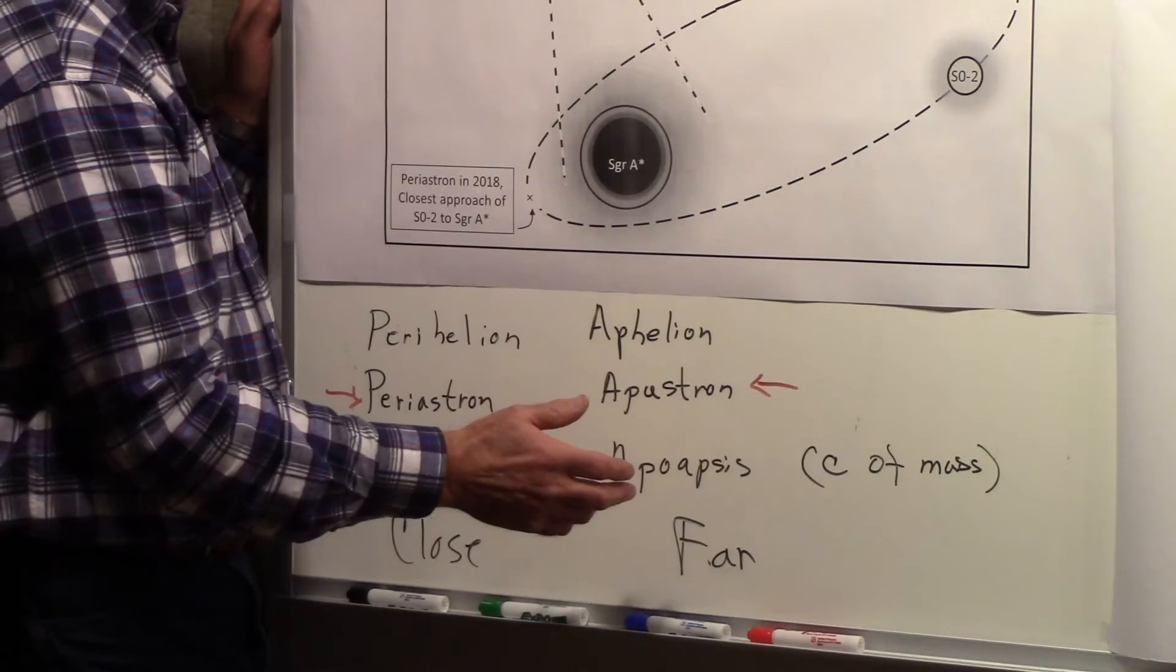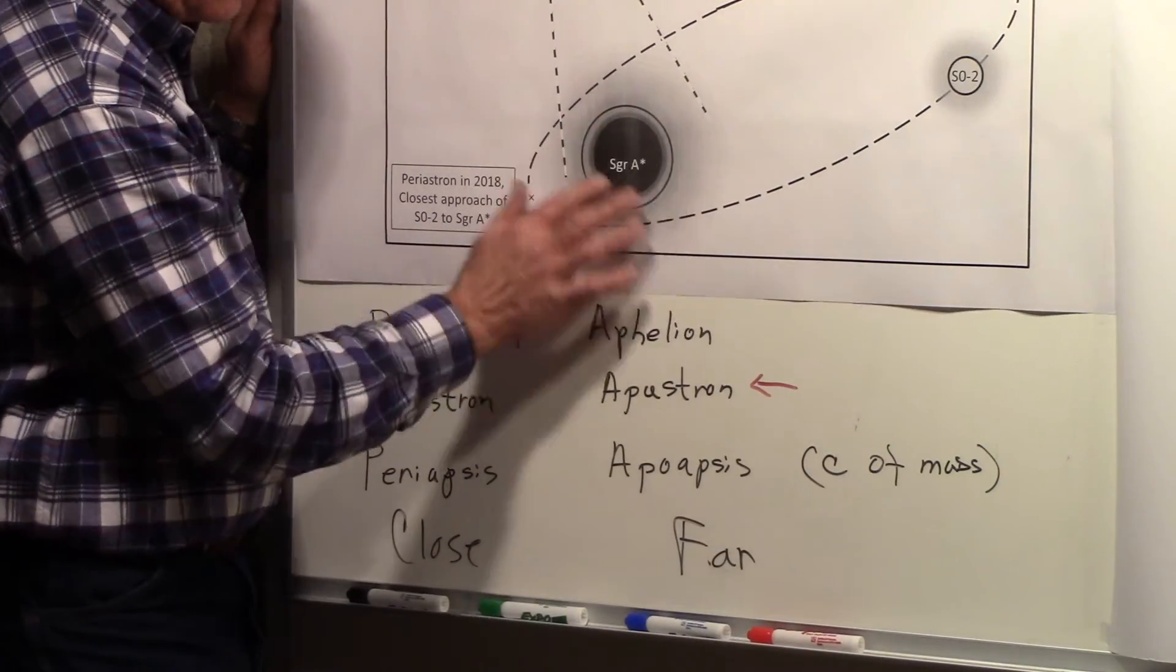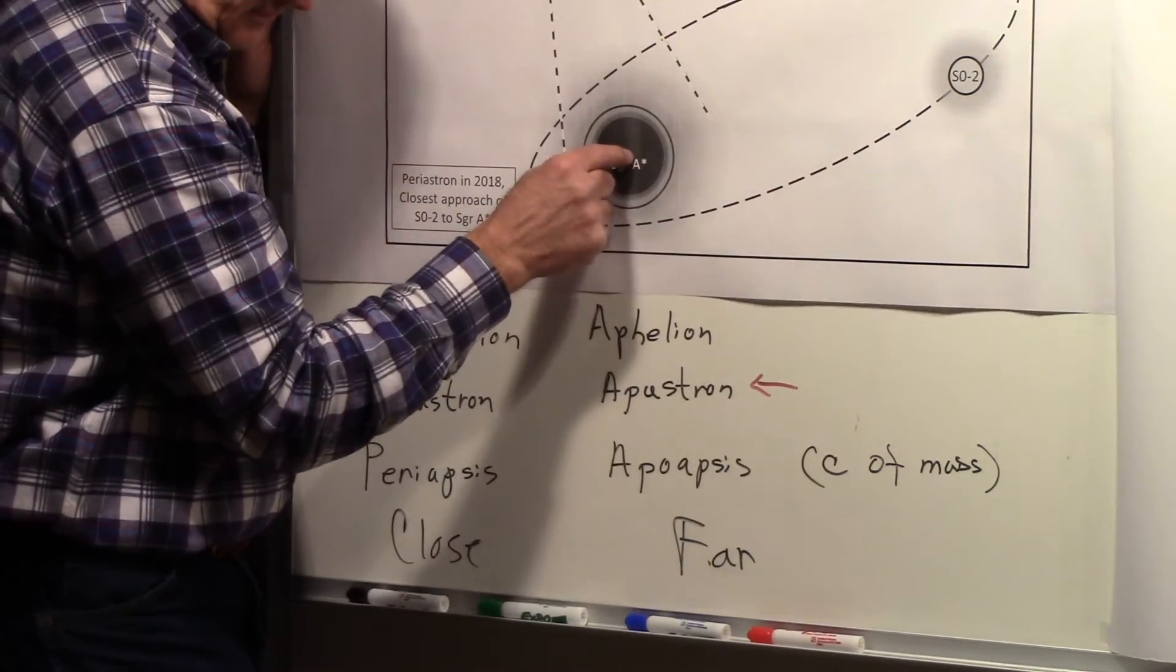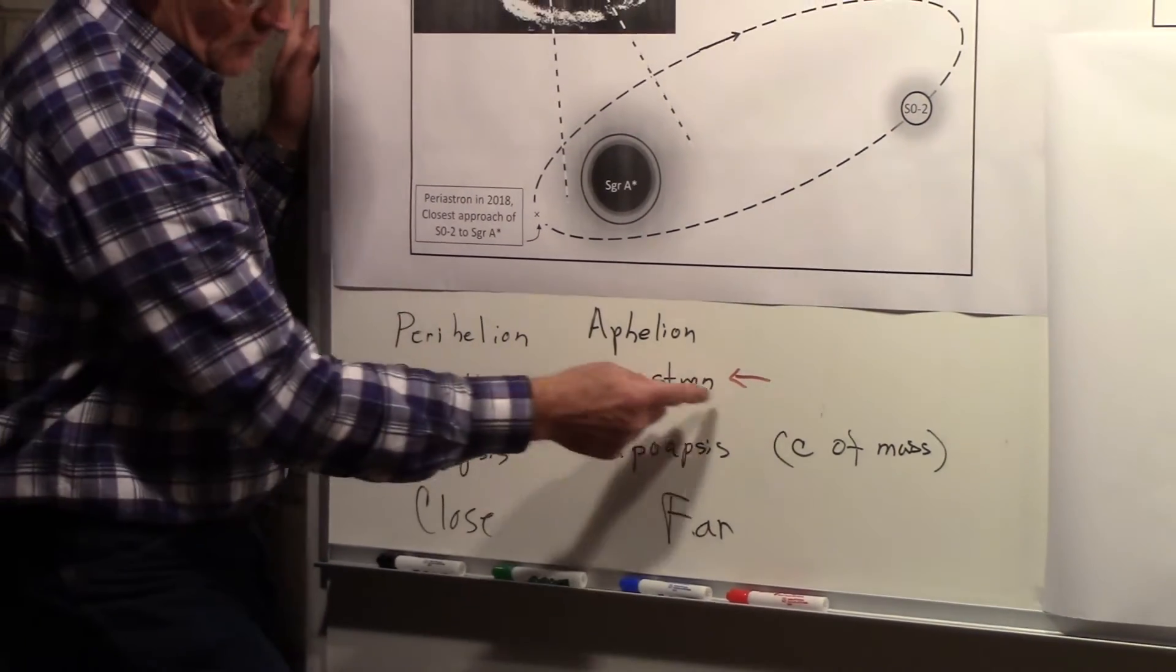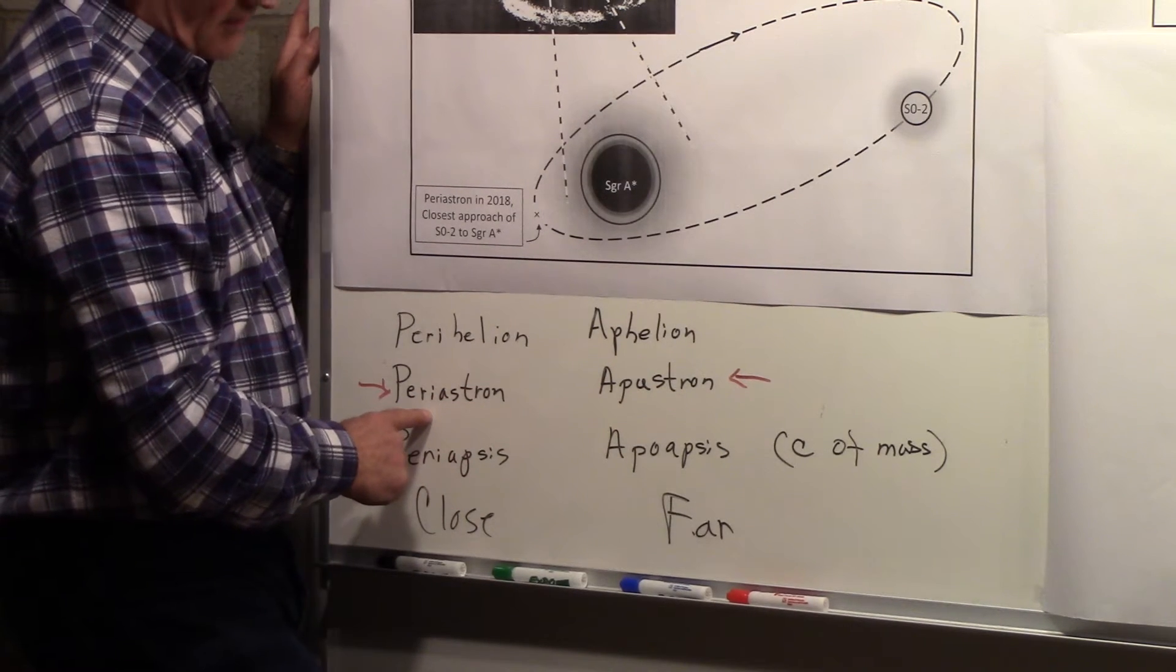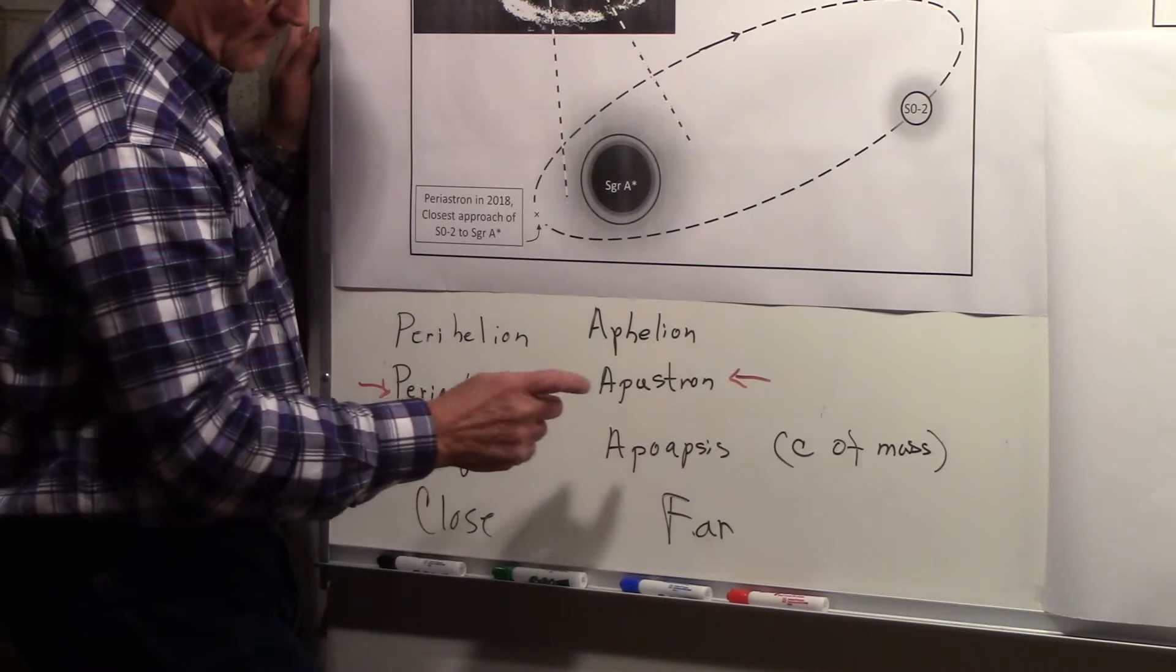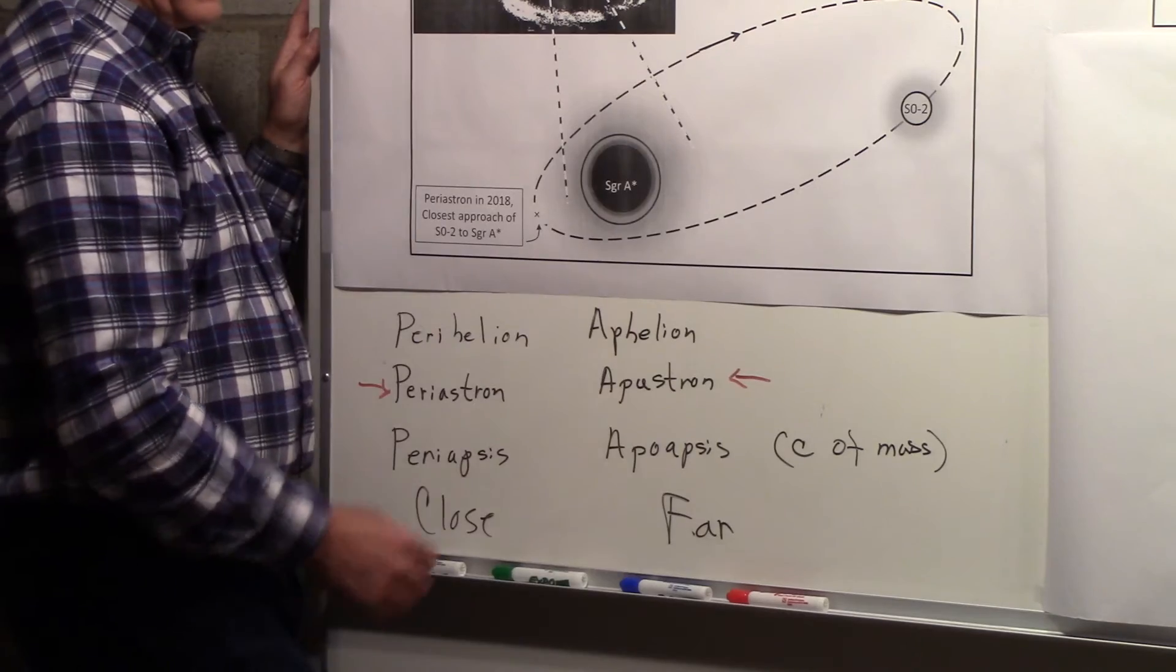There's another name: periapsis and apoapsis. They refer to a center of mass, but because the supermassive black hole is so large, the center of mass of this system is in the center of Sagittarius A*. We'll use these terms describing the closest point of star S02 to the black hole and this term to describe the most distant point.